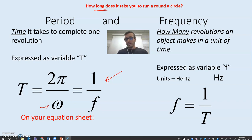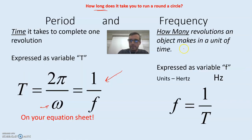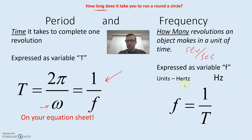We usually express frequency as revolutions per second — that's how many circles you do in a certain amount of time. It turns out that a hertz is a revolution per second. How do you remember this? Well, if you spin something around really fast and it hits you in the face, it hurts. So revolution per second is also hertz. Here's how it shows up on your equation sheet: frequency is 1 over T.